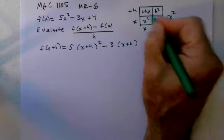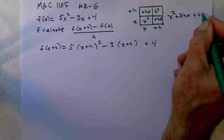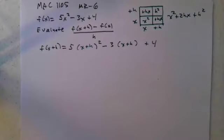I get x² plus hx plus hx plus h², which is x² plus 2hx plus h². That's what (x+h) squared is.